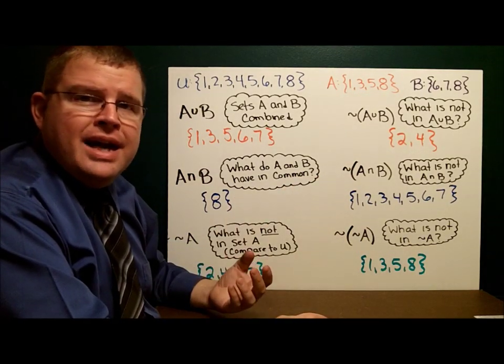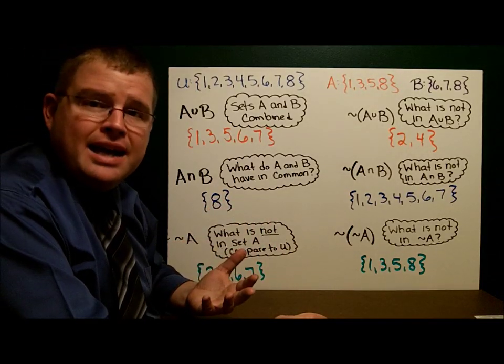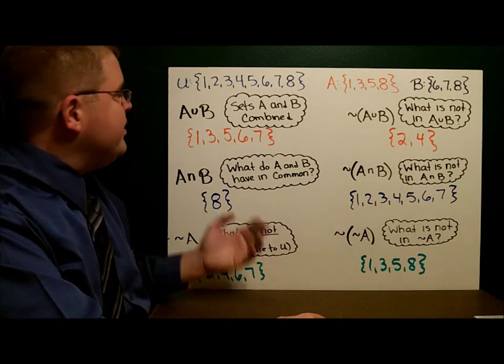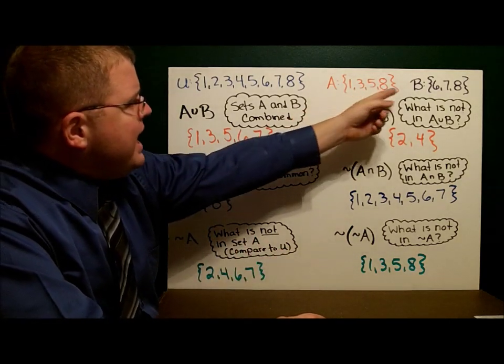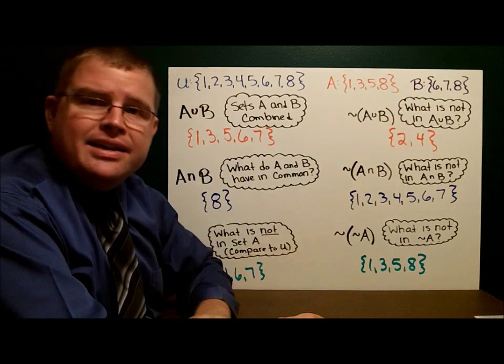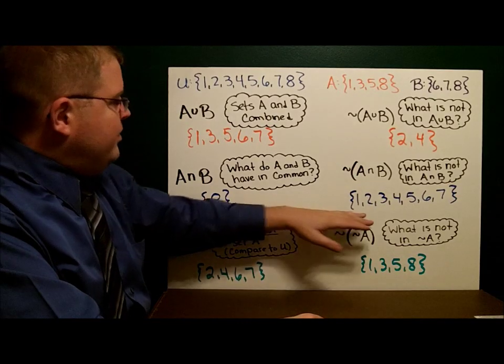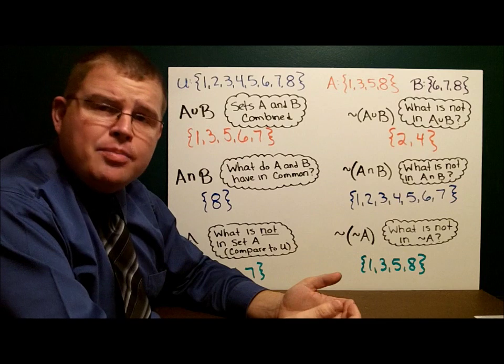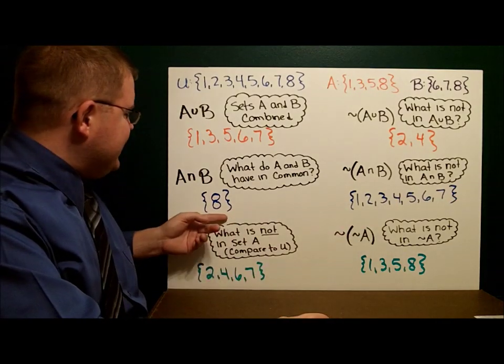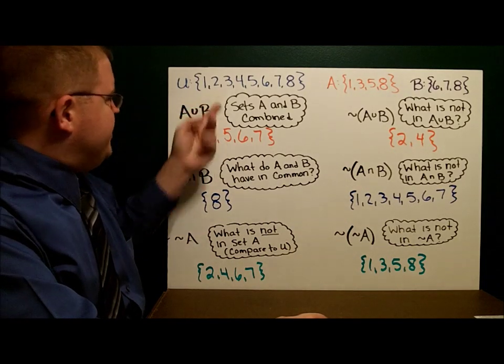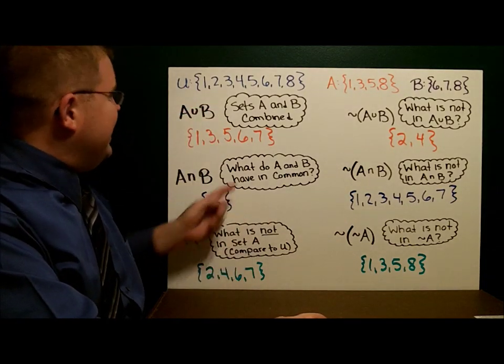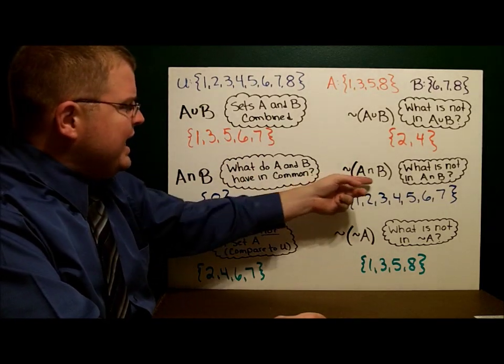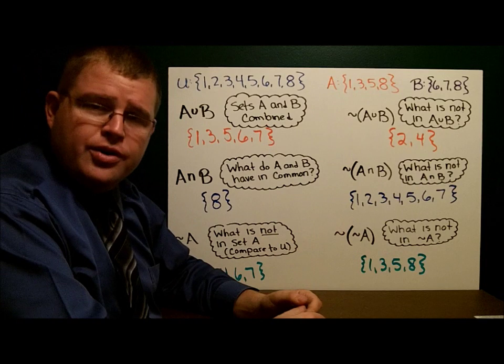The third thing they're asking us to do is find A intersect B. A intersect B means what do they have in common? The only thing that A and B have in common is the number 8. What is the complement of A intersect B? Anything that's left out of here. I'll compare it to the universe. It looks like 1, 2, 3, 4, 5, 6, 7 are all left out of here. So what is not in A intersect B? 1, 2, 3, 4, 5, 6, 7.